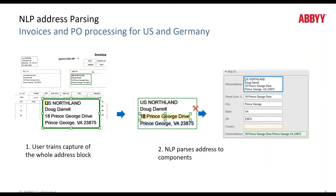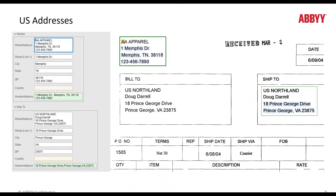The next topic is address parsing. This feature was highly requested and is now part of Update 2 for US and Germany addresses. With this new feature, you are able to select an entire address block — as indicated by step 1 — and the technology will parse the individual address components for you, as shown in step 2. Specifically, the technology looks for the street, city, state (for US addresses only), zip or postal code, and country. The parsing model has been pre-trained to extract US and German addresses.